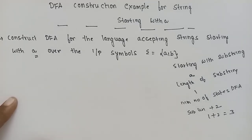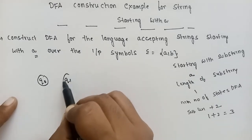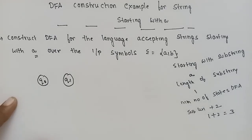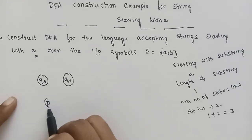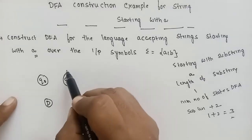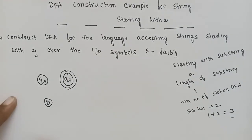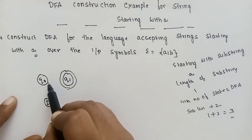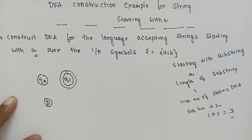So Q1 is the second state. The number of states needed is 2. Q0 is the initial state, Q1 is the final state, and DN is the dummy state.